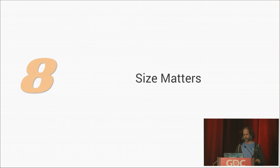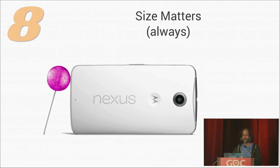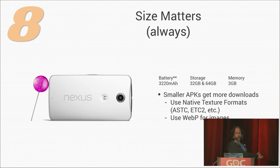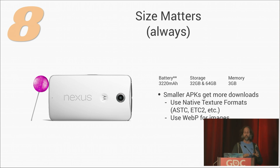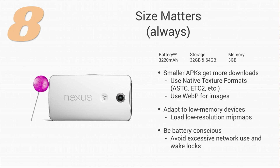Eight: size matters — always. Our Nexus 6 is our biggest, baddest phone with up to 64 gigs of onboard storage and three gigs of memory, and that's still not enough. Smaller APKs tend to get more downloads. Use multi-APK and GPU native texture formats to keep things small in memory. Use WebP for distribution size. Consider hosting assets for post-install to keep the initial download smaller. People will delete things that are big. On lower memory devices, adapt by using native texture formats. Also, we can't make batteries much larger — keep people playing by avoiding excessive network use and wake locks. If you need to keep the screen on, use a window flag, not a wake lock.